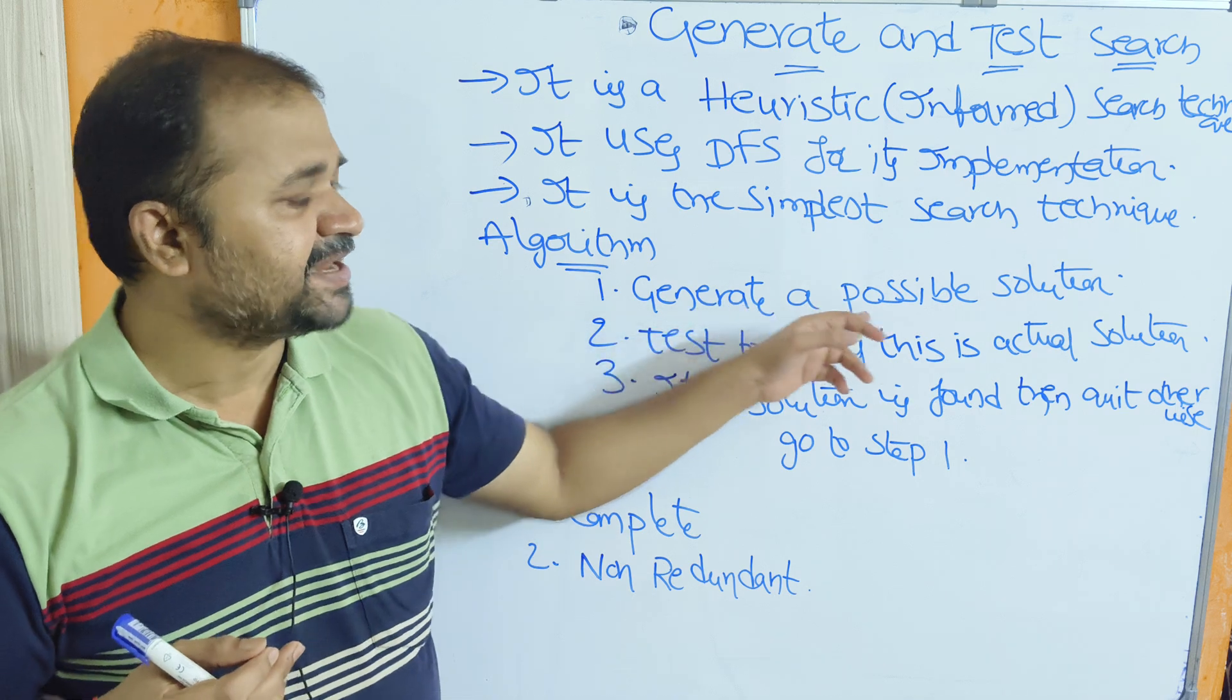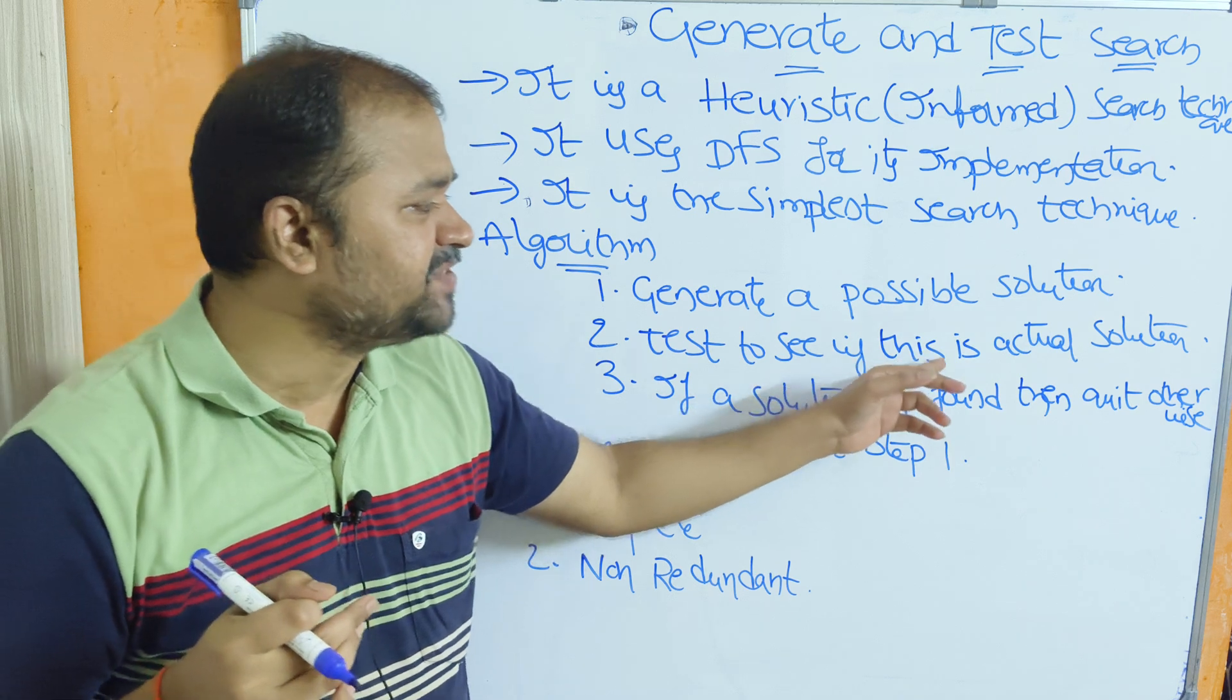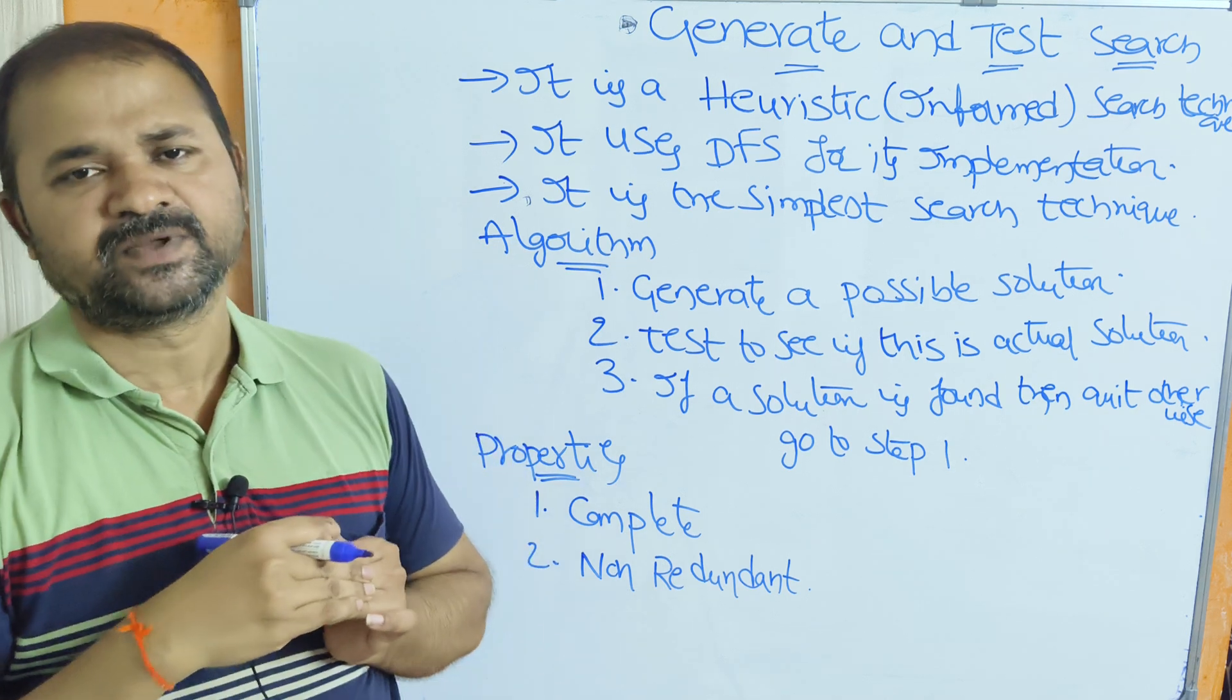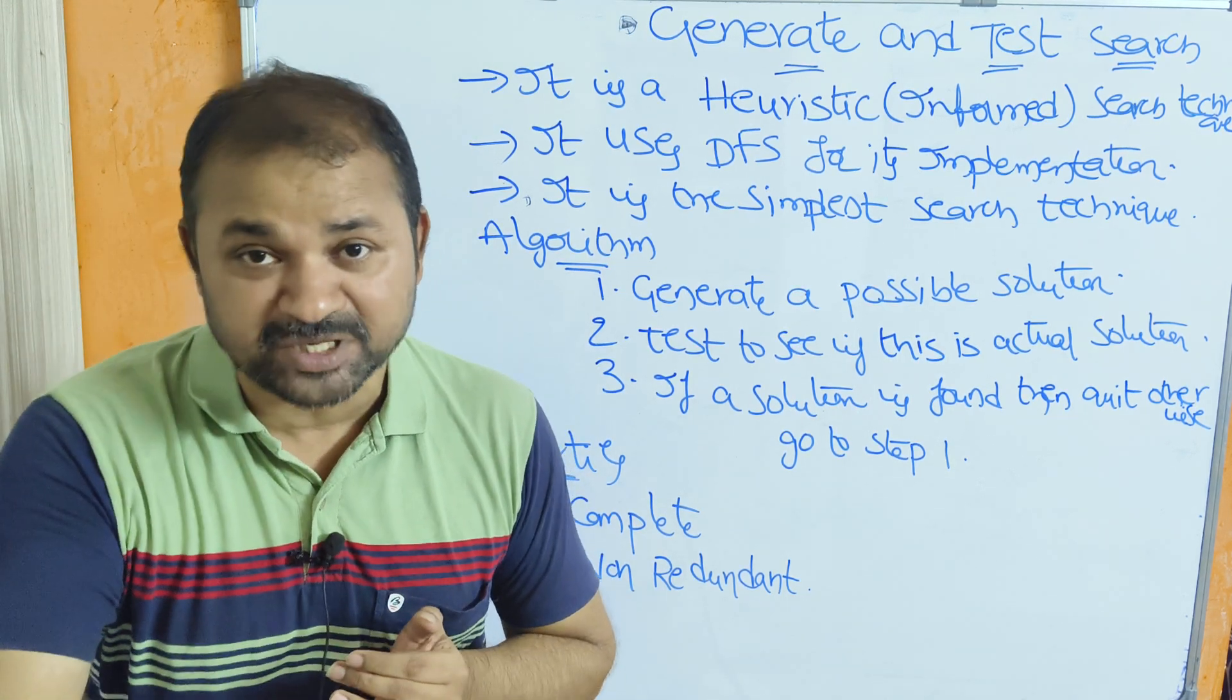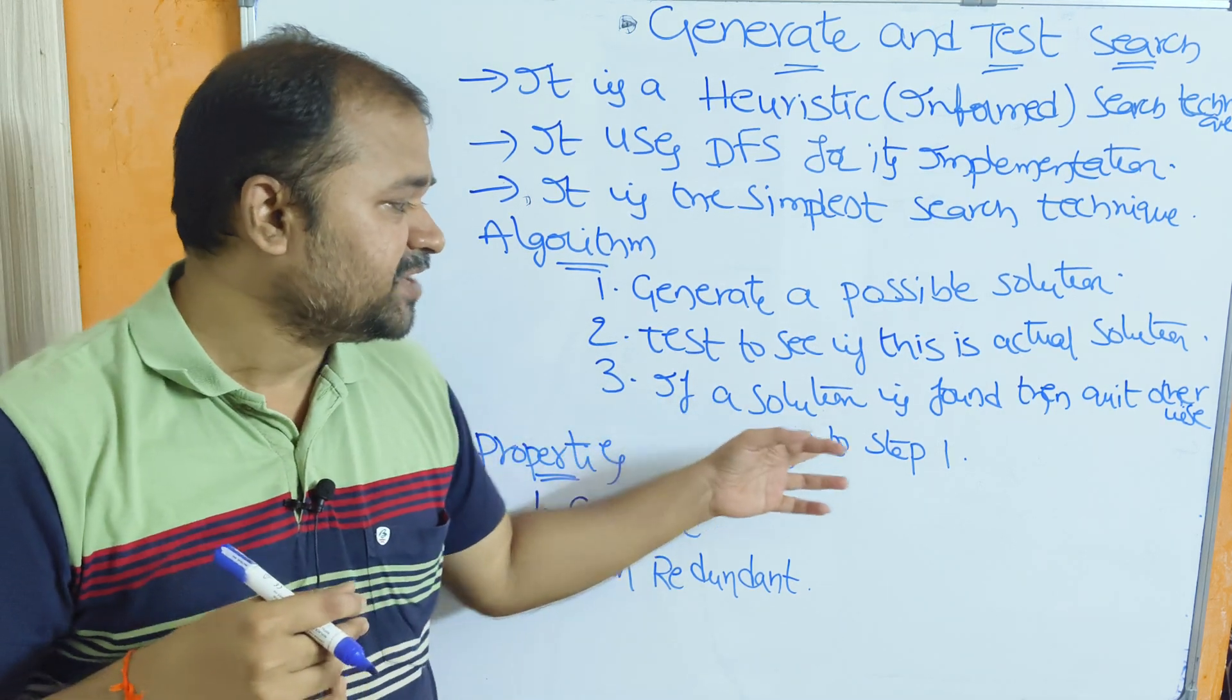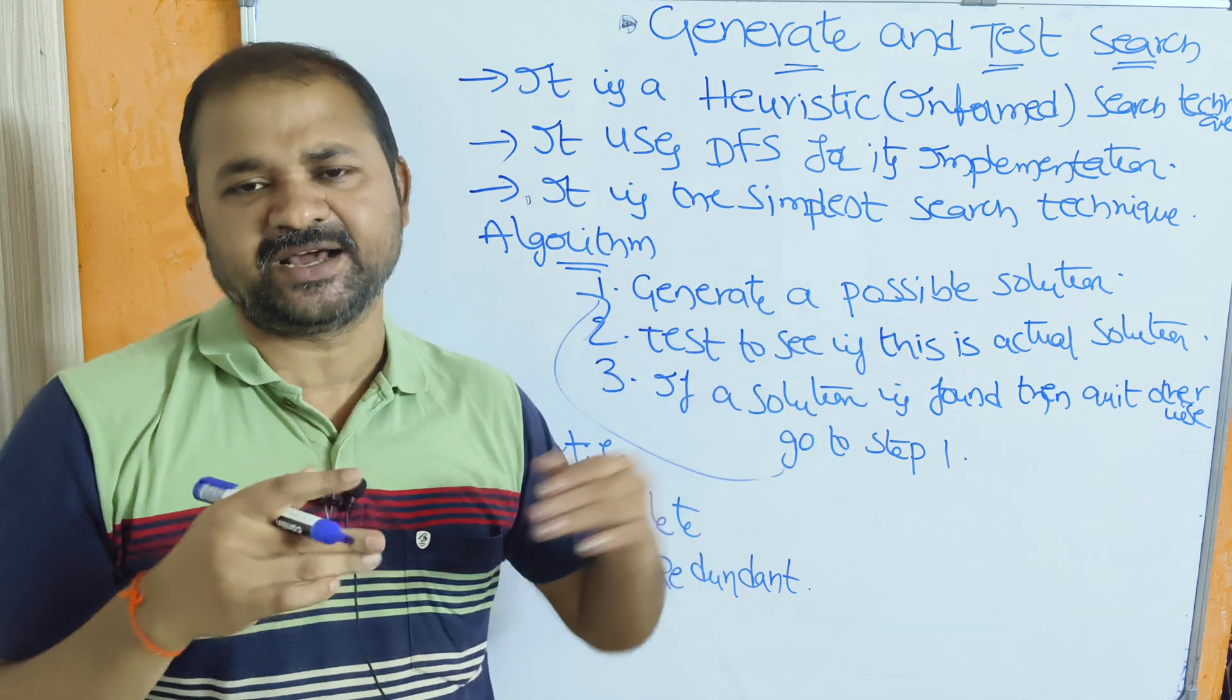So first step, generate a possible solution. Second step, test to see if this is the actual solution or not. The generator module will generate a possible solution. Next, the tester module will check whether that possible solution is correct or not. Third step, if your solution is found, then quit. Otherwise, go to step 1. So this is the simplest algorithm.